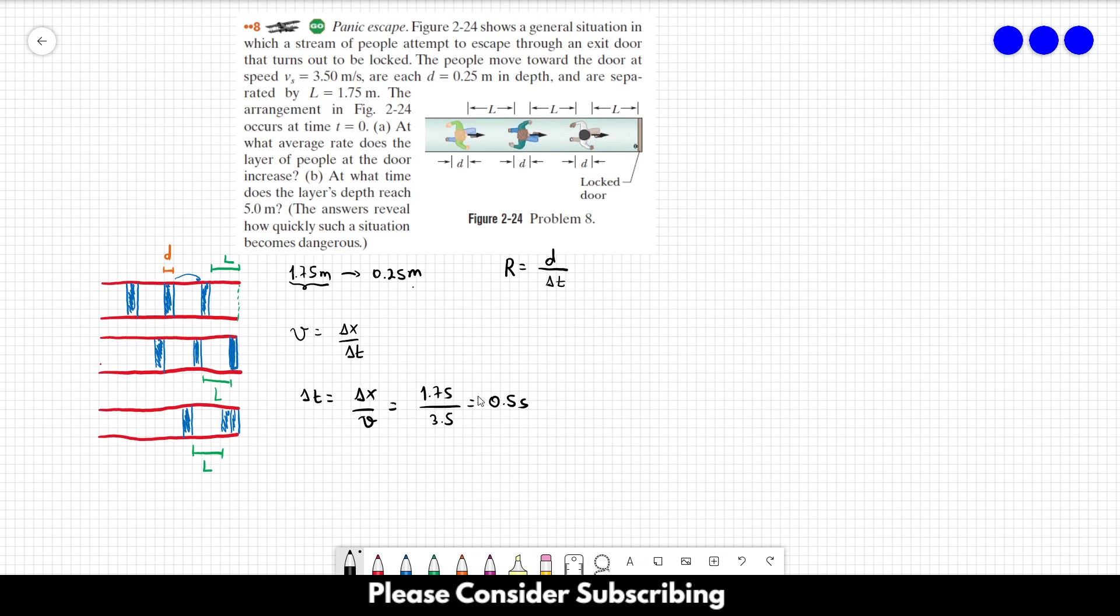We know that every 0.5 seconds, the layer increases by 0.25 meters. So the rate is 0.25 over 0.5, which equals 0.5 meters per second. That's the rate of increase of the layer. Every second it increases 0.5 meters. So that's the answer of letter A.